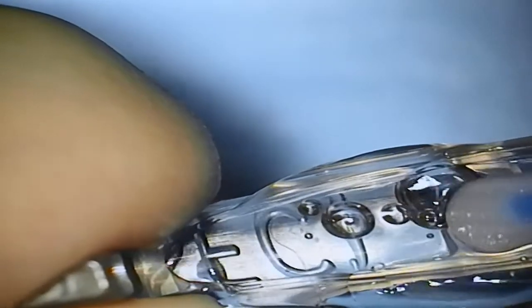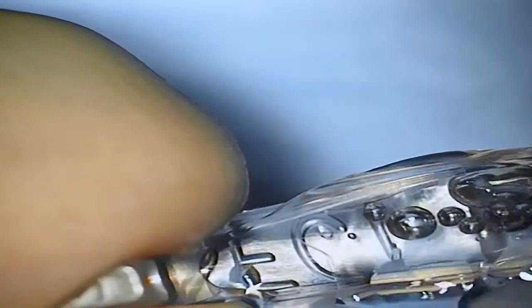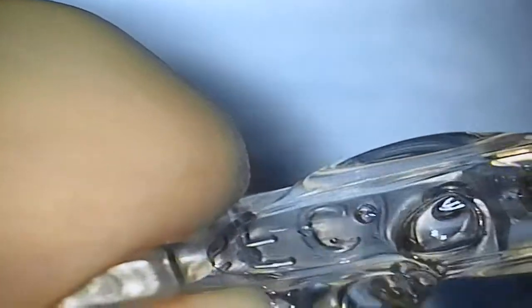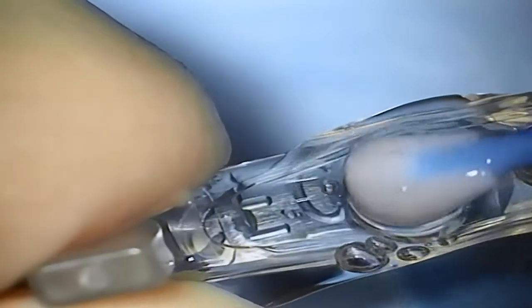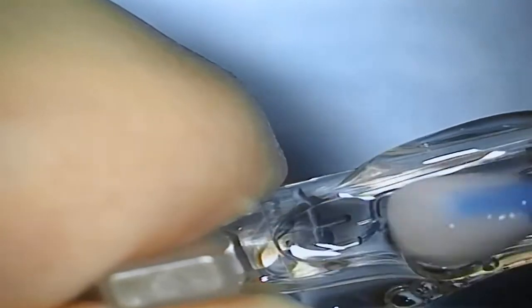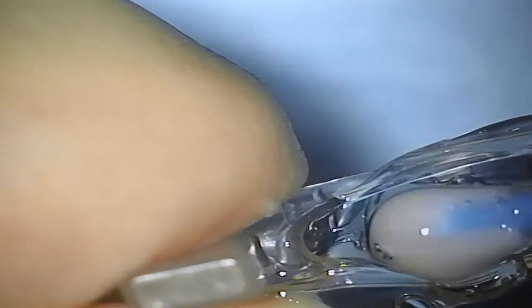We can also use the pusher itself without any metal instruments. As you can see here, with enough viscoelastic, we use this soft touch of the pusher to push the lens gradually and squeeze it without much effort into the conus of the injector. And we can also use the same movement to check the free movement of the lens.